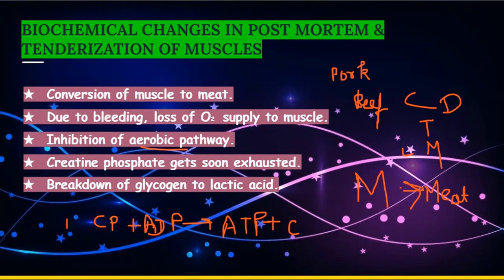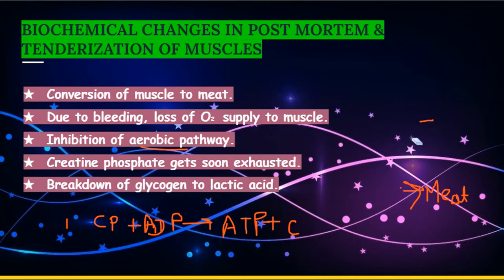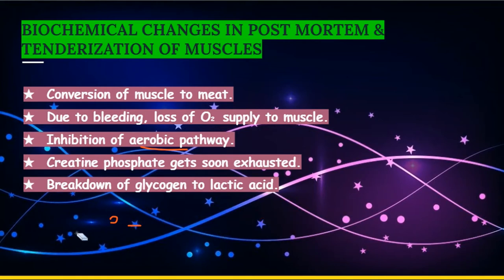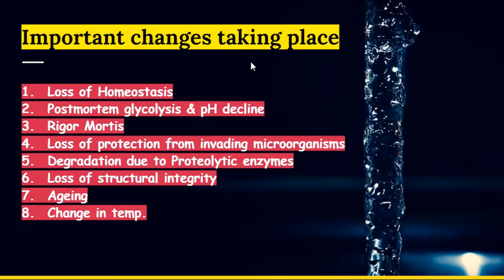This process continues until all the glycogen gets exhausted, and then the biochemical changes start taking place one by one. The first important post-mortem change is loss of homeostasis. This means the system for maintaining a balanced internal environment — which helps the body cope with stresses of oxygen deficiency and extreme variations in temperature, energy supply, and pH — all gets lost.